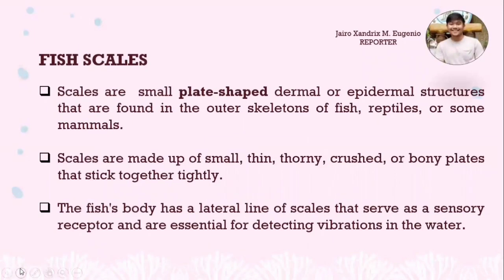Fish scales are small plate-shaped dermal or epidermal structures found in the outer skeletons of fish, reptiles, or some mammals. Many vertebrate skeletons are covered by two types of scales: epidermal and dermal. The malpighian layer of the epidermis gives rise to epidermal scales in terrestrial vertebrates such as reptiles, birds, and mammals. Dermal scales emerge from the fish mesenchyme. Fish scales are made up of small, thin, thorny, or bony plates that stick together tightly. The fish's body has a lateral line of scales that serve as a sensory receptor for detecting vibrations in the water.